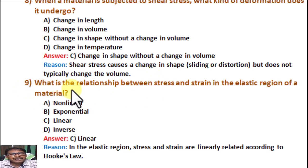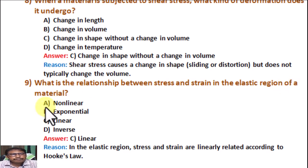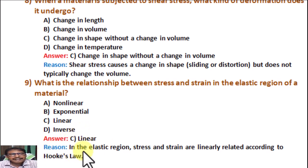Question number 9. What is the relationship between stress and strain in the elastic region of a material? Option A: Non-linear. Option B: Exponential. Option C: Linear. Option D: Inverse. Correct answer is C, Linear. Reason: In the elastic region, stress and strain are linearly related according to Hooke's law.